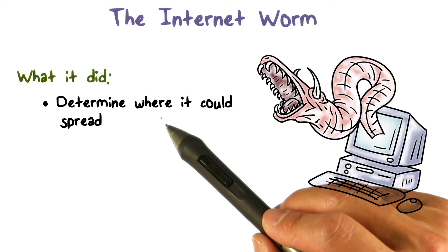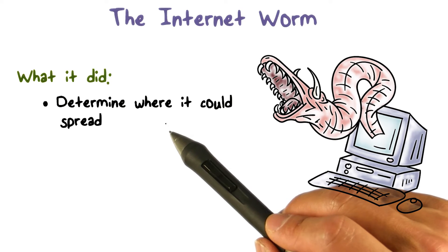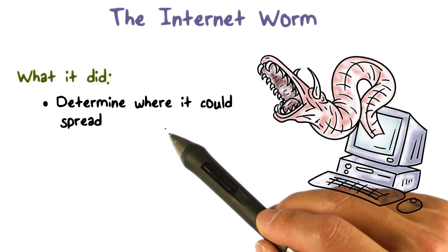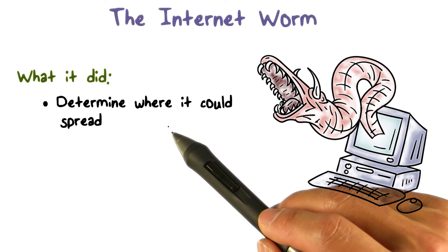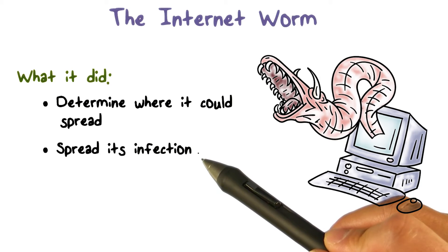Here's how the worm worked. When the worm runs on a system, it looks for other systems on the internet that it can spread to. These systems have some security vulnerabilities that the worm can exploit. And then, by exploiting these vulnerabilities, the worm can infect these systems — in other words, it can copy itself to these systems. And that's how it spread.